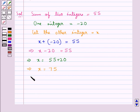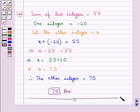Therefore we say the other integer is equal to 75. So 75 is our final answer. This completes the session. Hope you have understood the solution of this question. Thank you.